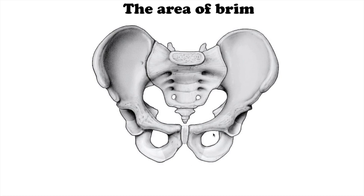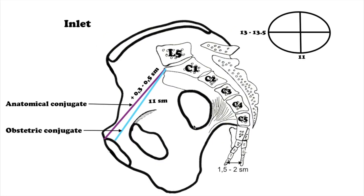The area of brim is limited from behind by the superior margin of the promontory of the sacral bone, on the sides by the terminal lines of the hip bones or the innominate lines, and from the front by the upper margin of the pubic bone and symphysis. The straight dimension — the distance from the promontory of the sacral bone to the most protruding point of the superior internal margin of the symphysis — is called the true or obstetric conjugate, conjugata vera, and measures 11 cm.